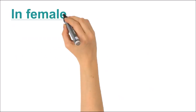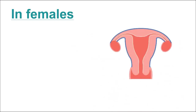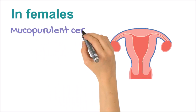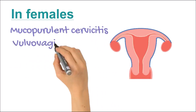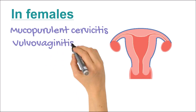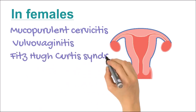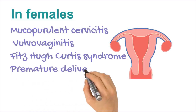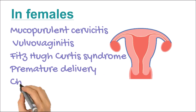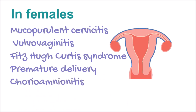We will be discussing the clinical manifestations in females. In females, it can cause mucopurulent cervicitis, which is the most common presentation. It can also cause vulvovaginitis. It can also cause Fitz-Hugh-Curtis syndrome, which is characterized by peritonitis and perihepatic inflammation. It can also cause premature delivery, chorioamnionitis, sepsis, and infections in infants.